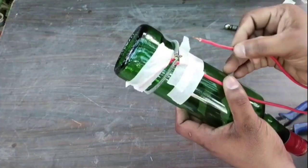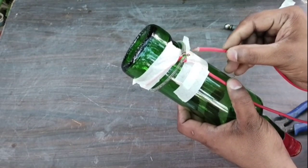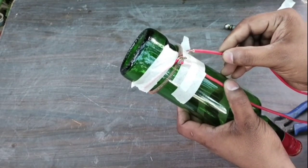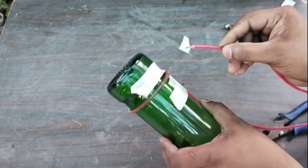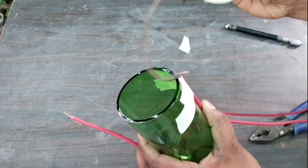Nichrome wire is used in electric heaters. This will heat up very quickly, due to which the temperature of the bottle heats up very quickly. The bottle gets cut in 10 to 15 seconds.